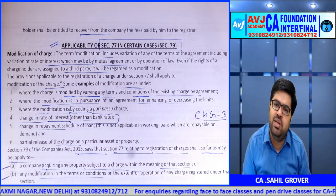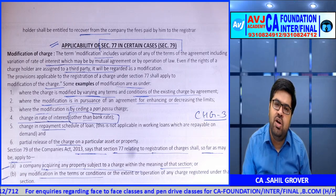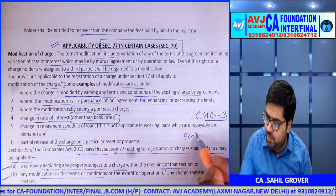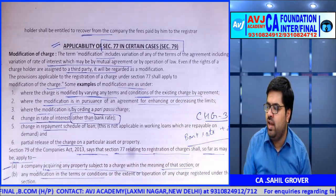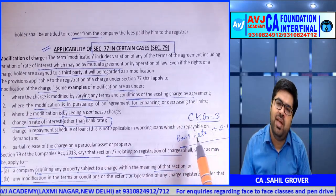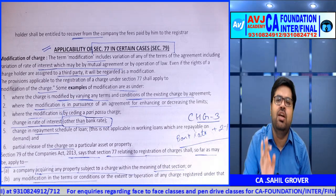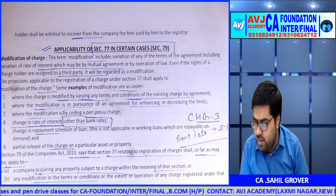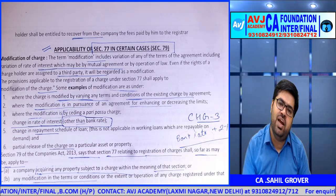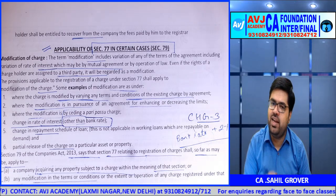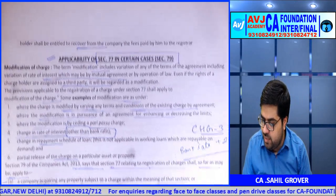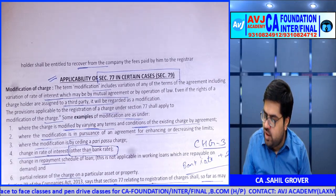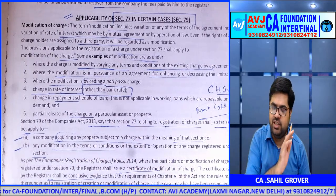Regarding modification of charge: one important point — if the interest rate on a loan is structured as a fluctuating rate, say bank rate plus 2%, and the bank rate changes (which is in RBI's hands), that change does not constitute a modification of charge. No intimation to ROC is required for such automatic rate changes. However, if any other change is made to the charge terms — a new party, a changed interest rate, etc. — that must be reported to the ROC within the Section 77 time limits.